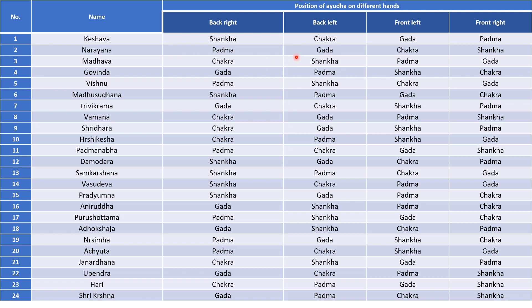Similarly, when the arrangement is Padma, Gada, Chakra, Shankha, then he is known as Narayana. All the arrangements of the weapons have been given along with the names. Reciting these names and knowing their meaning is highly considered to be auspicious.